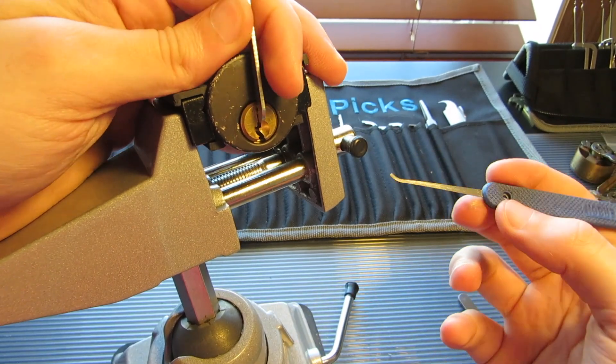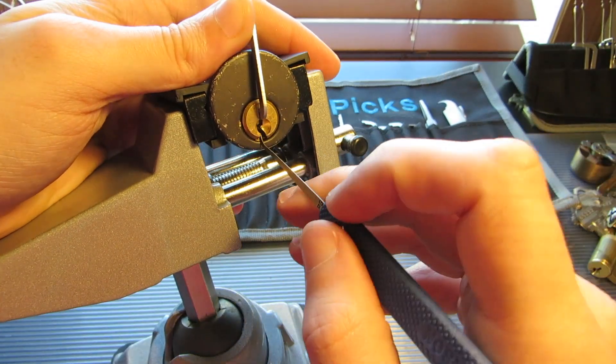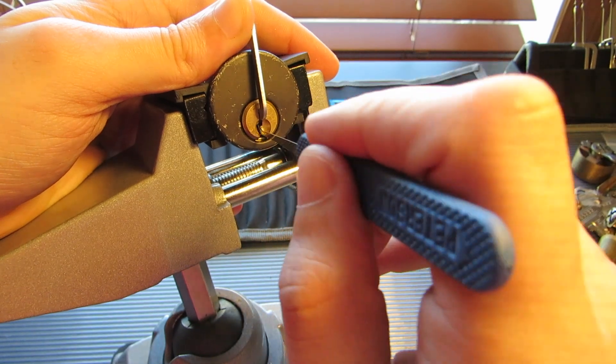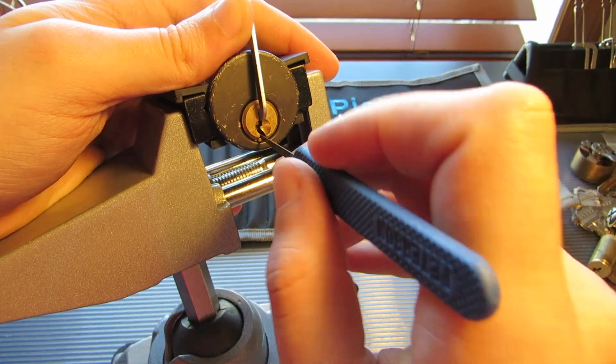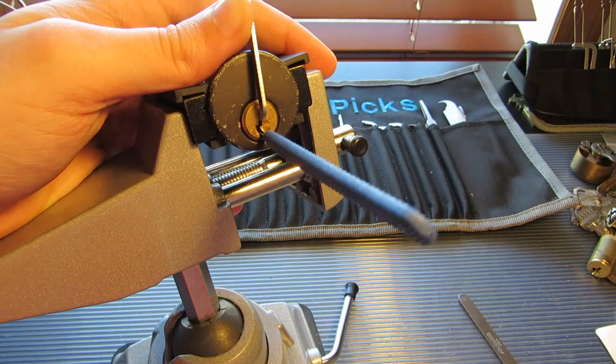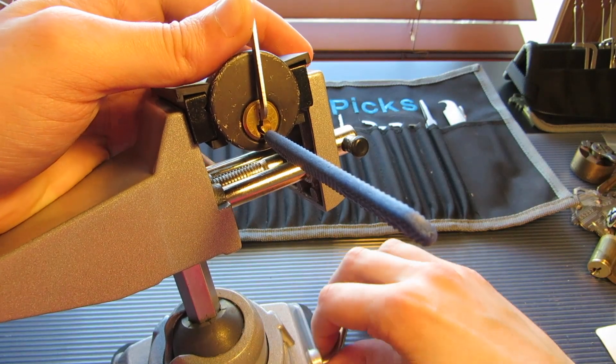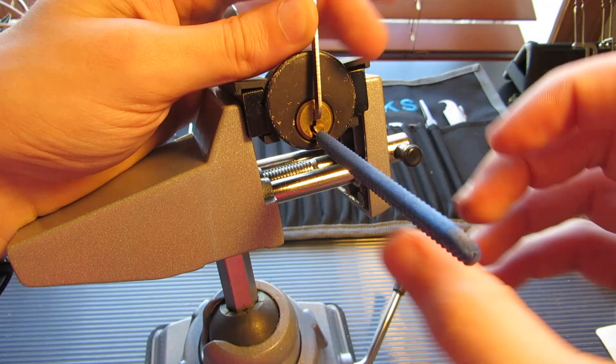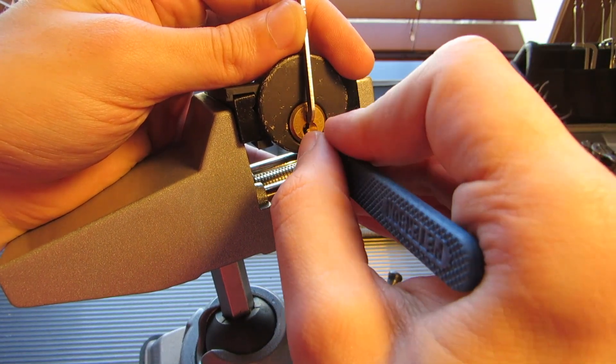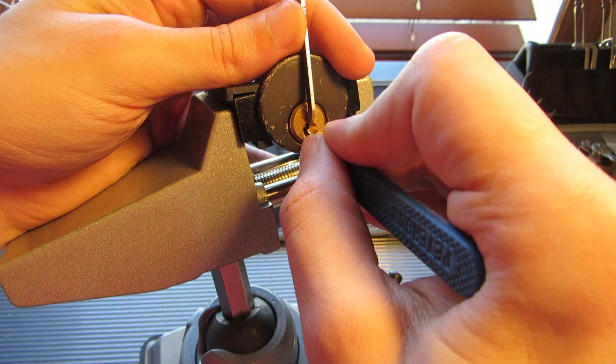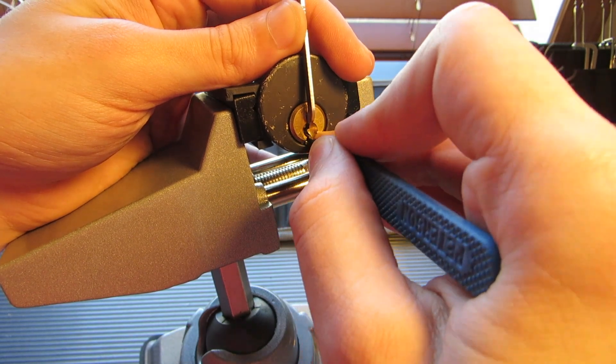I'm gonna do one of my new tricks that I've found with Schlag keyways - 15,000's right down the center. It kind of gets around the warding. You gotta be careful though, because it kind of bends things a little tiny bit, so you don't want to break your pick. But if you're careful, you can do it pretty well. Let's see if we can get some of these pins to tell us their secrets.